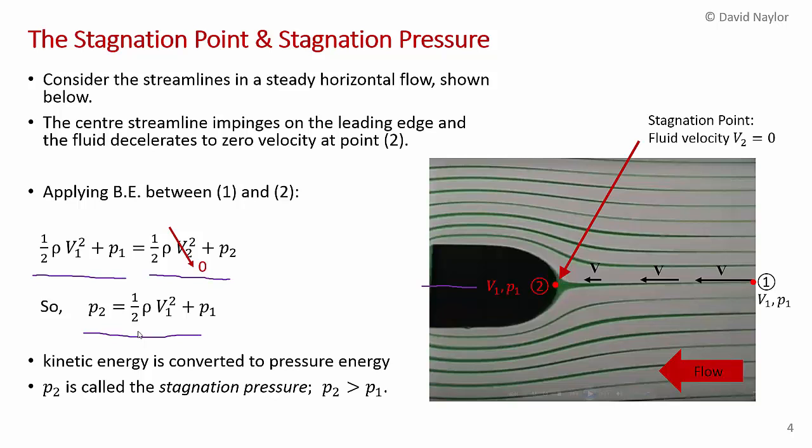So what's happened here is the kinetic energy at 1 has been converted into pressure energy. You've got a higher pressure at point 2 than at point 1, and that's because you've had a conversion of kinetic energy in the flow into pressure energy. And the pressure at point 2 is called the stagnation pressure. It's the highest pressure you can get.